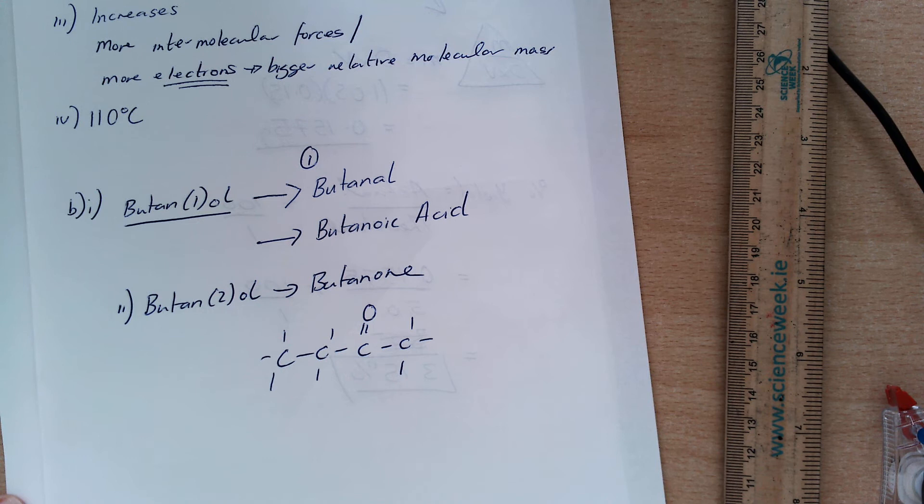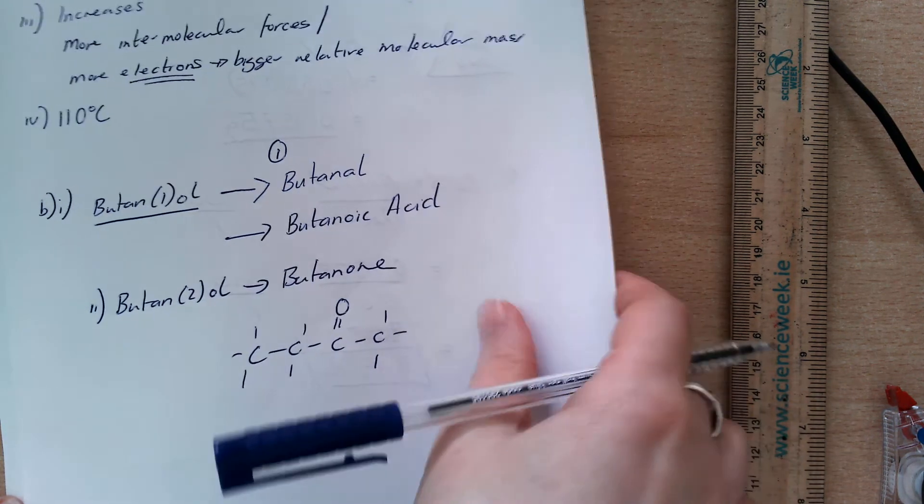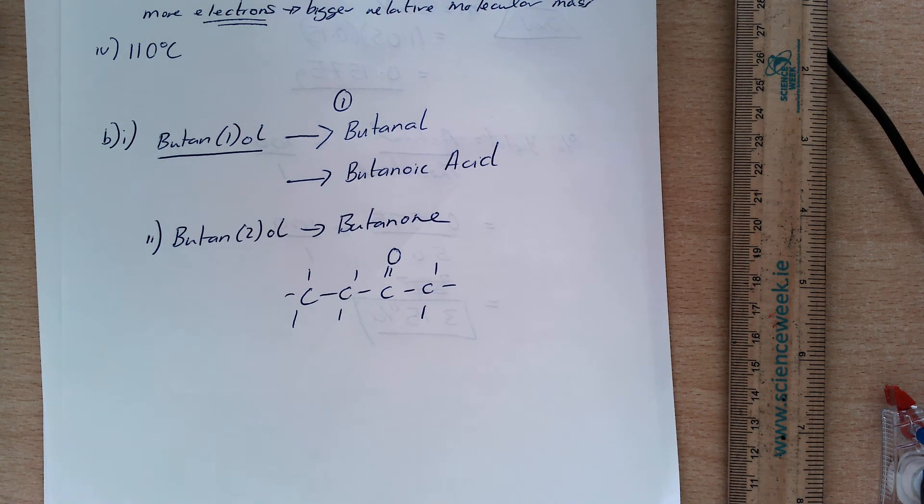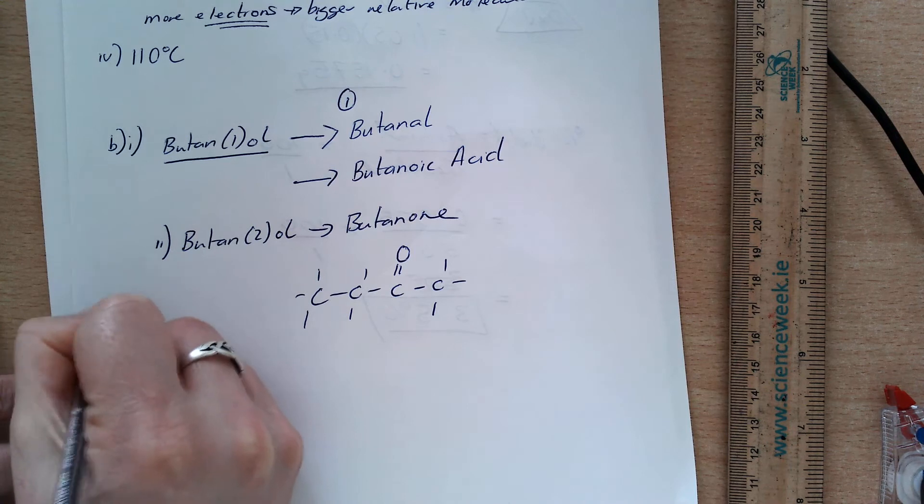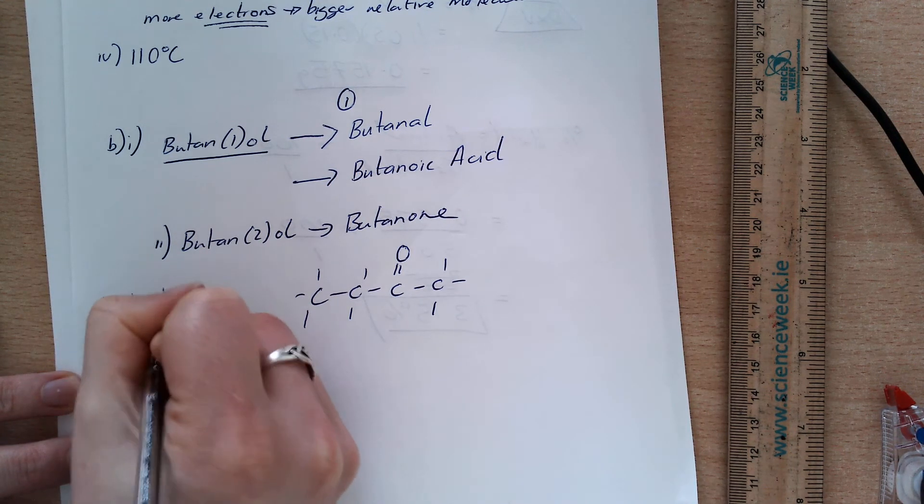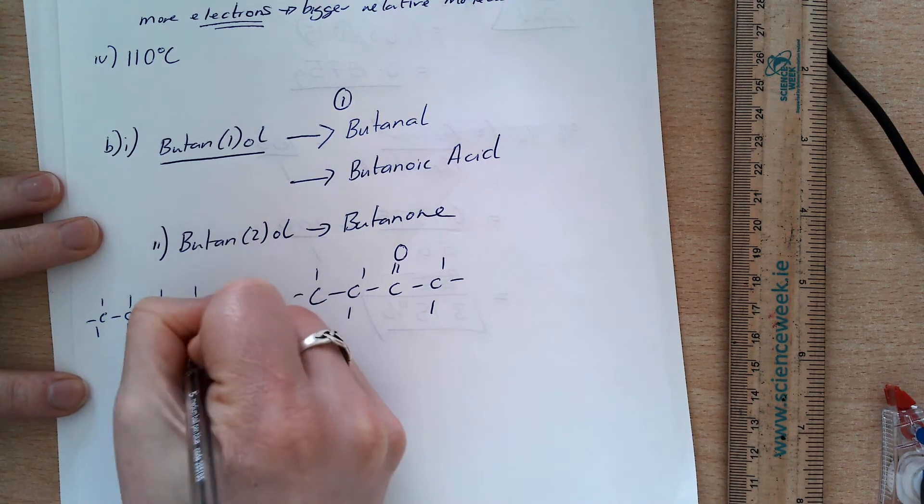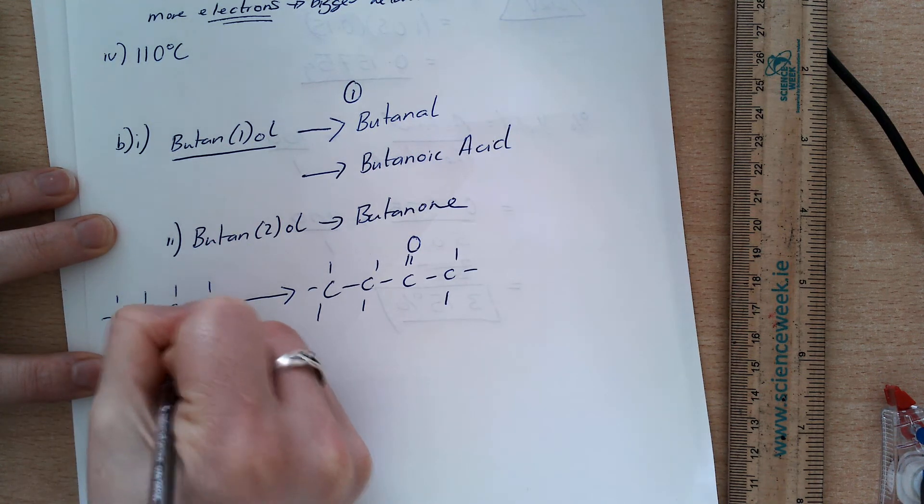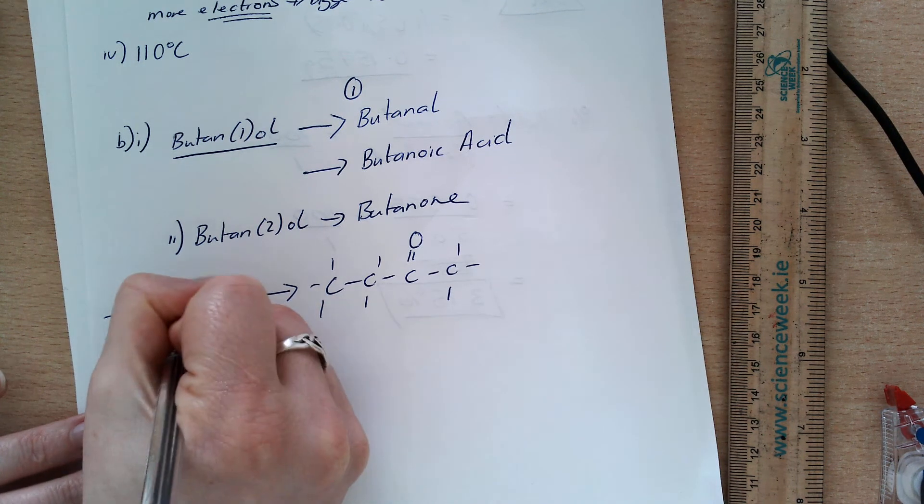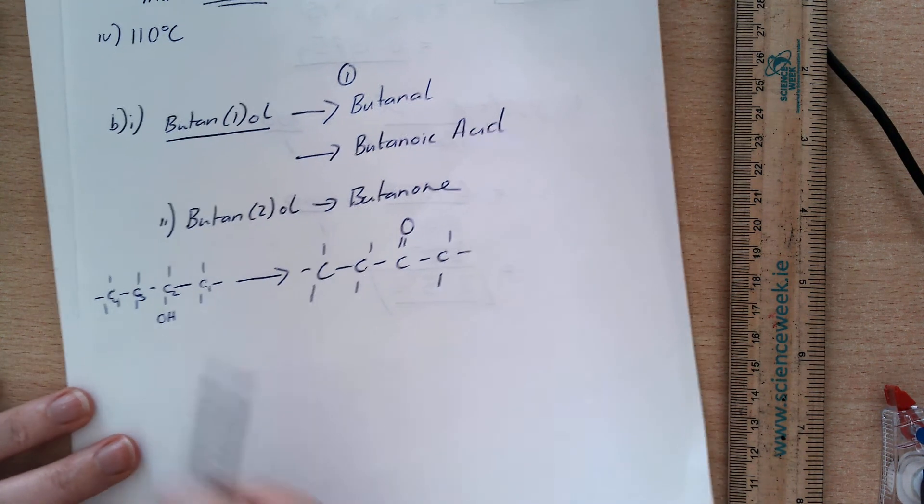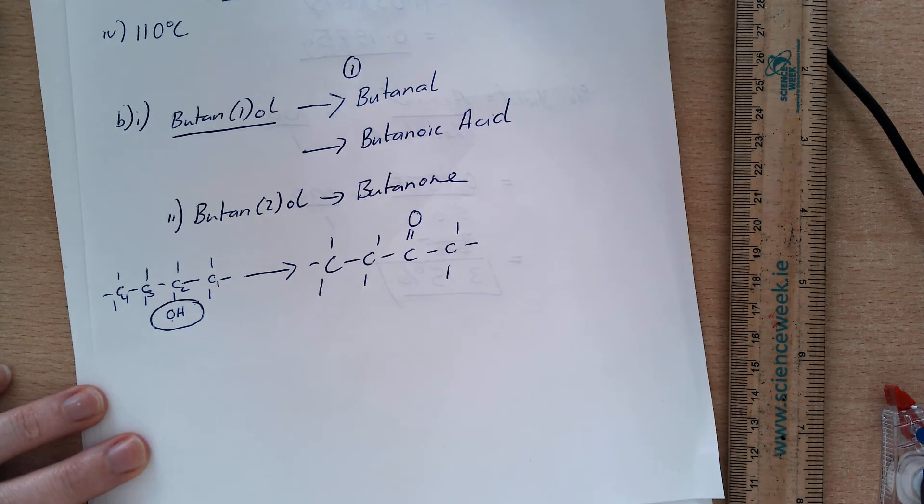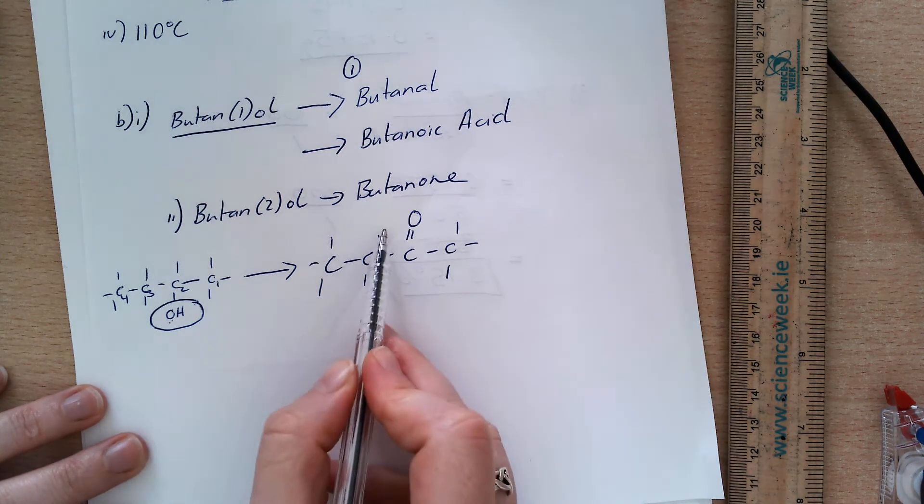Then you're asked, identify clearly which bonds in butan-2-ol are broken in this oxidation. So, what I'm going to have a look at here is what I have present and what I have new. So, if I look, butan-2-ol is this. And I'm converting it into this. And my OH is on my second carbon if I number right to left here. We're asked here for the bonds in butan-2-ol which are broken. This is the first one that's broken because there is no OH bond here.